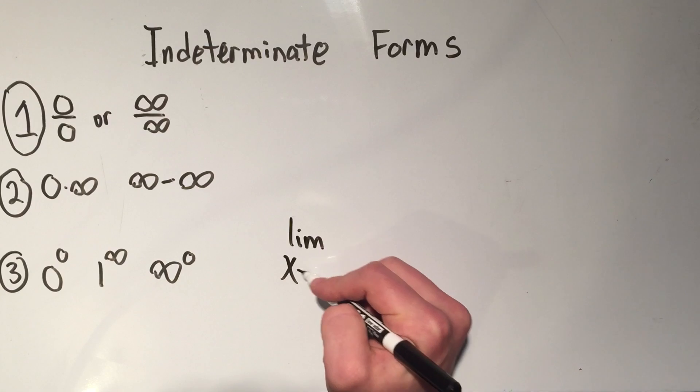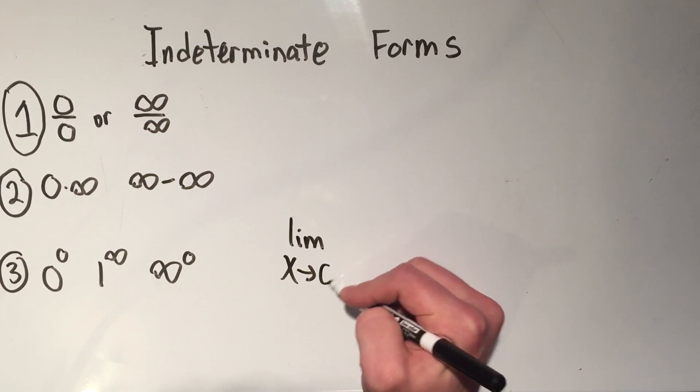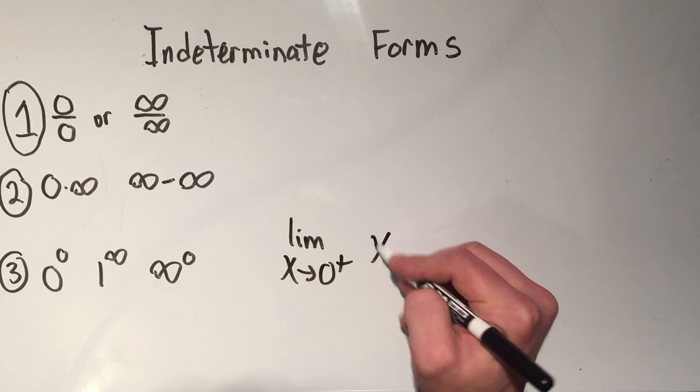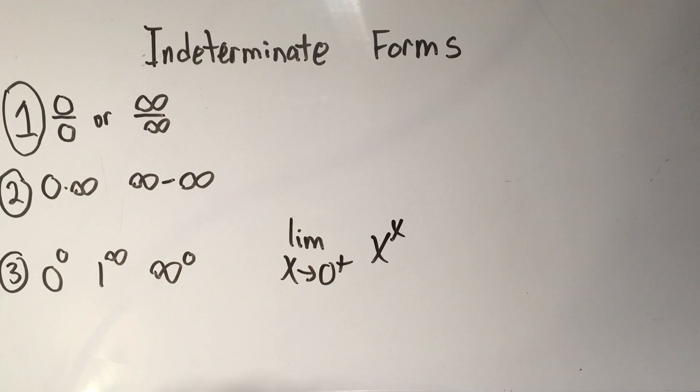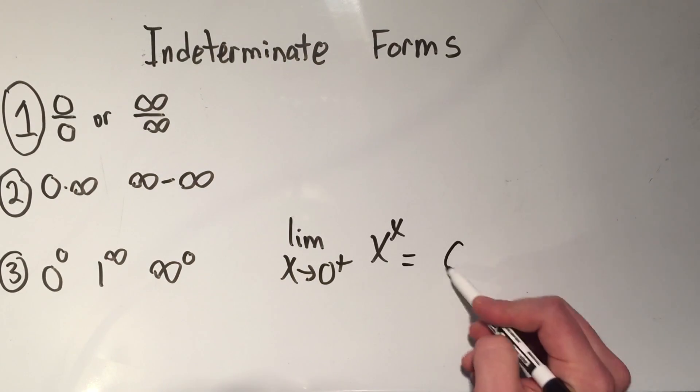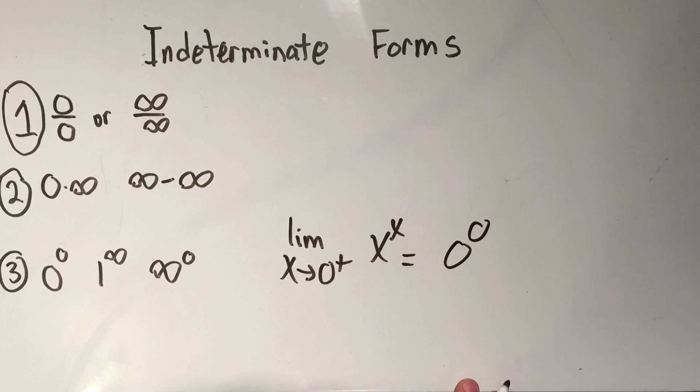So here's an example of something when that would happen. If you had limit as x goes to zero from the right of x to the x, I actually made a video about this very problem. It's a really common question asked, so I have a video on this problem. I'm not going to go through it right here, but if you want to see this problem done, you can check it out. I've got it on my channel. If I evaluate this, I plug in zero for x, I have zero to the zero, that's an indeterminate form.